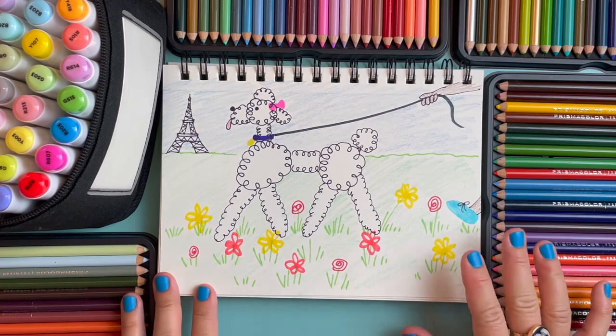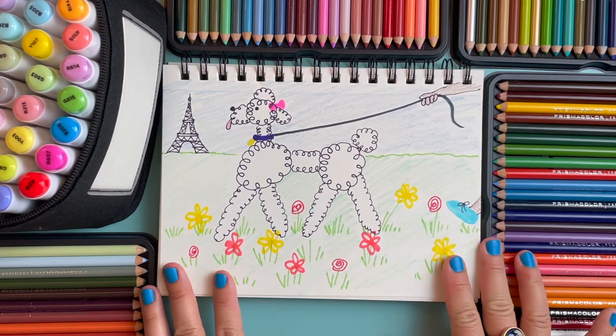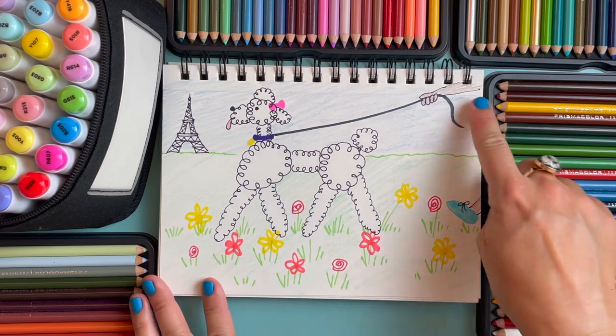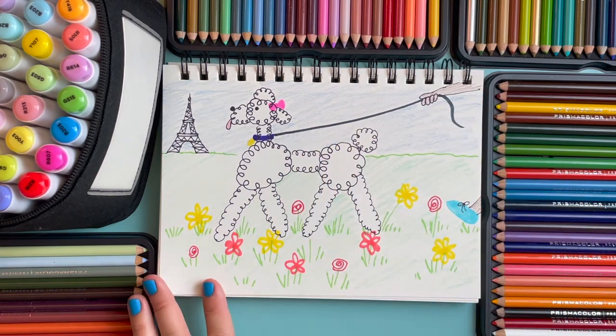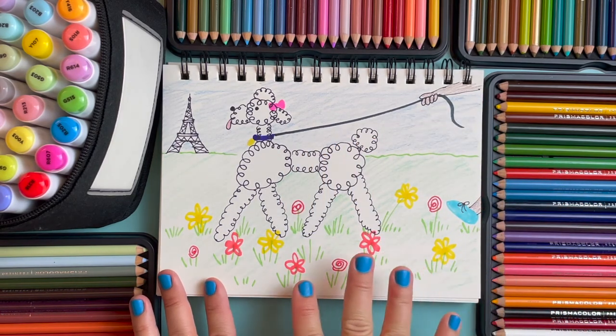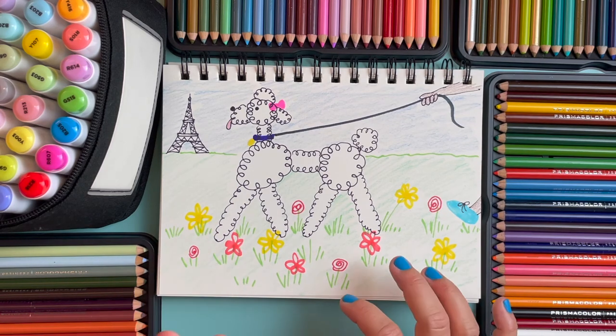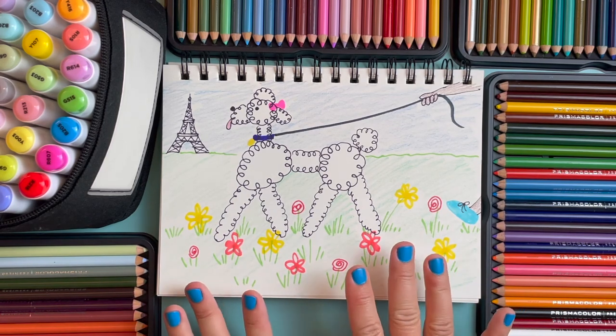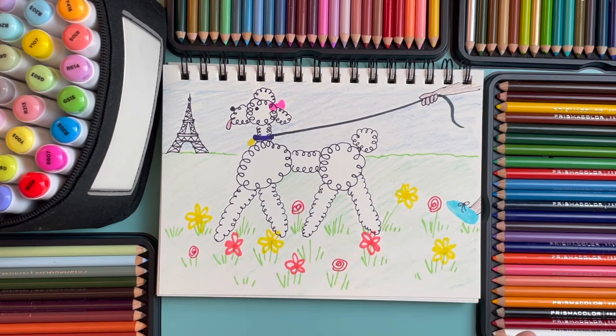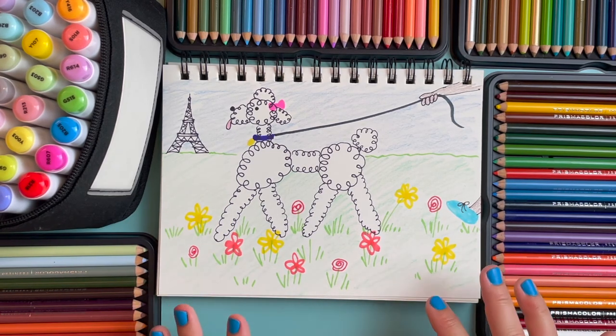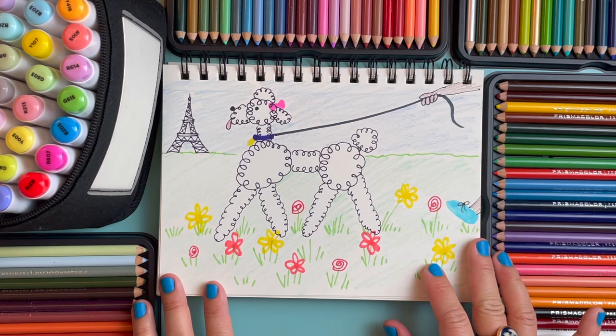That was so fun drawing this circle doodle curly poodle and I even added the owner taking the poodle for a walk and I thought that it looked nice having our little curly poodle strolling through the Parisian park with the Eiffel Tower in the background. How fun! Well I hope you had fun drawing too. See you next time. The end.